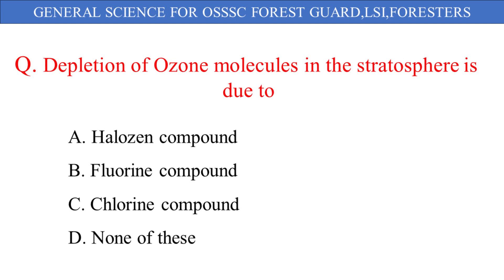Depletion of ozone molecules in the stratosphere is due to: A. Halocene compound, B. Fluorine compound, C. Chlorine compound, D. None of these. And the correct answer is option C: Chlorine compound.